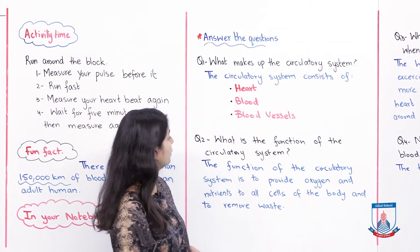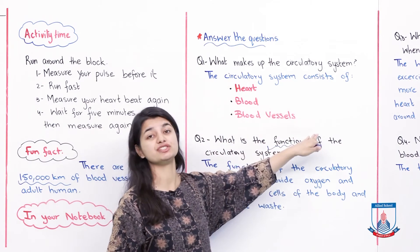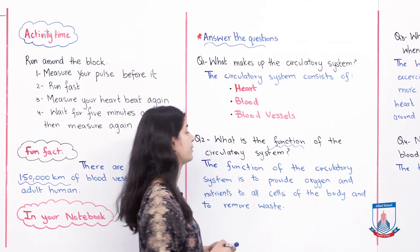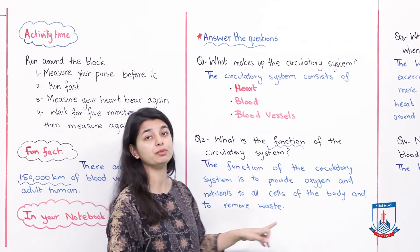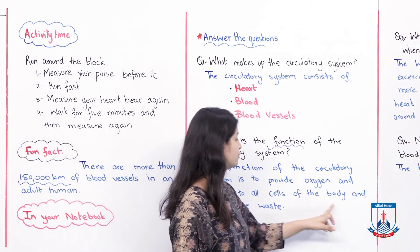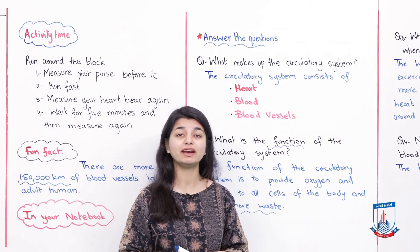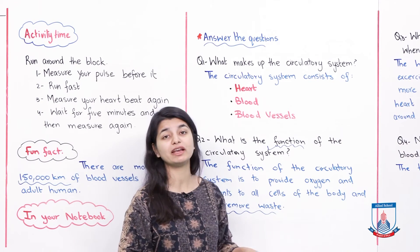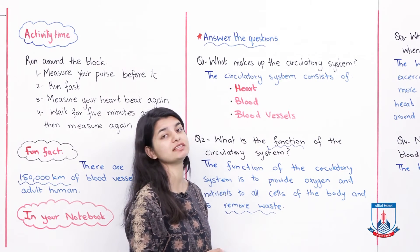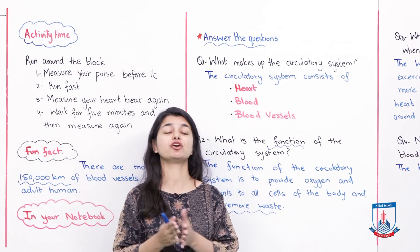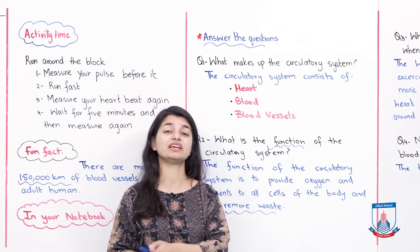Question number 2: What is the function of the circulatory system? The function of the circulatory system is to provide oxygen and nutrients to all cells of the body, and to remove waste material from them. These are the three functions: providing oxygen to each cell, providing nutrients, and removing waste. We have repeated this a lot, so you should have no problem writing it simply.